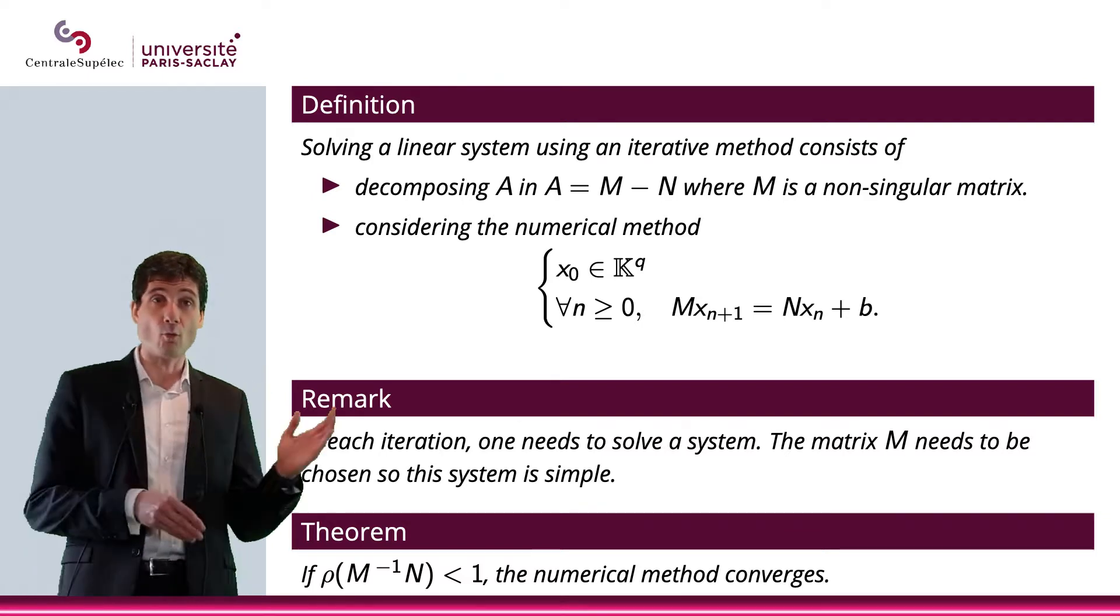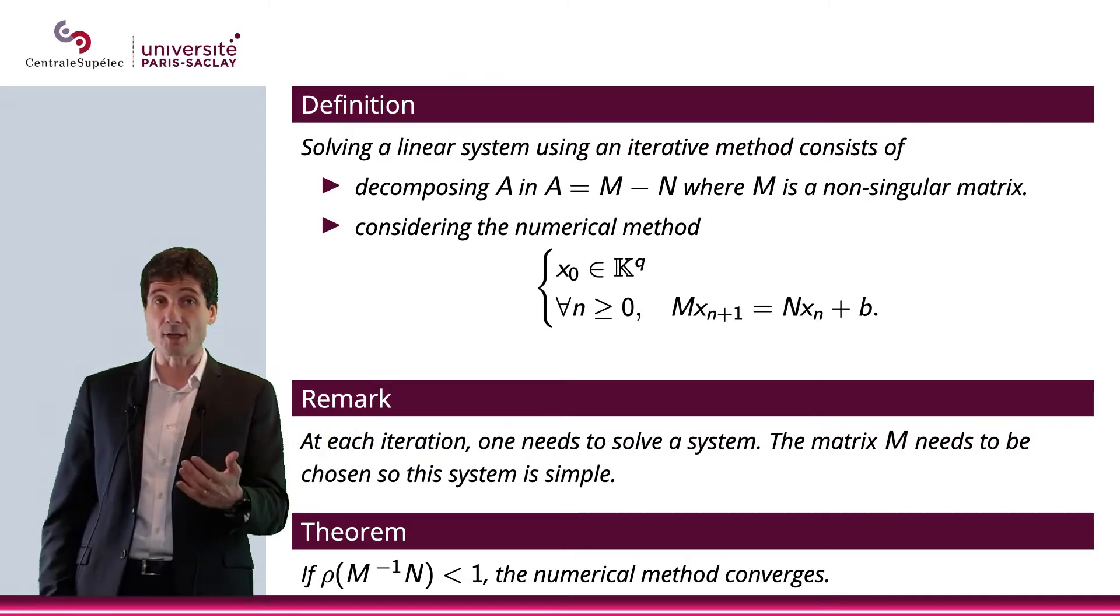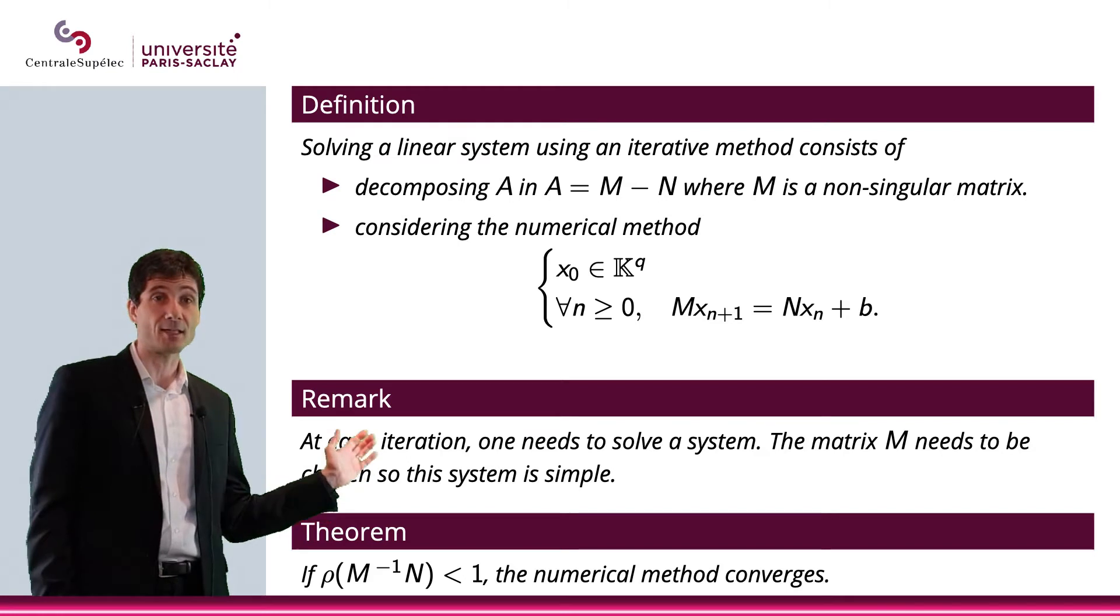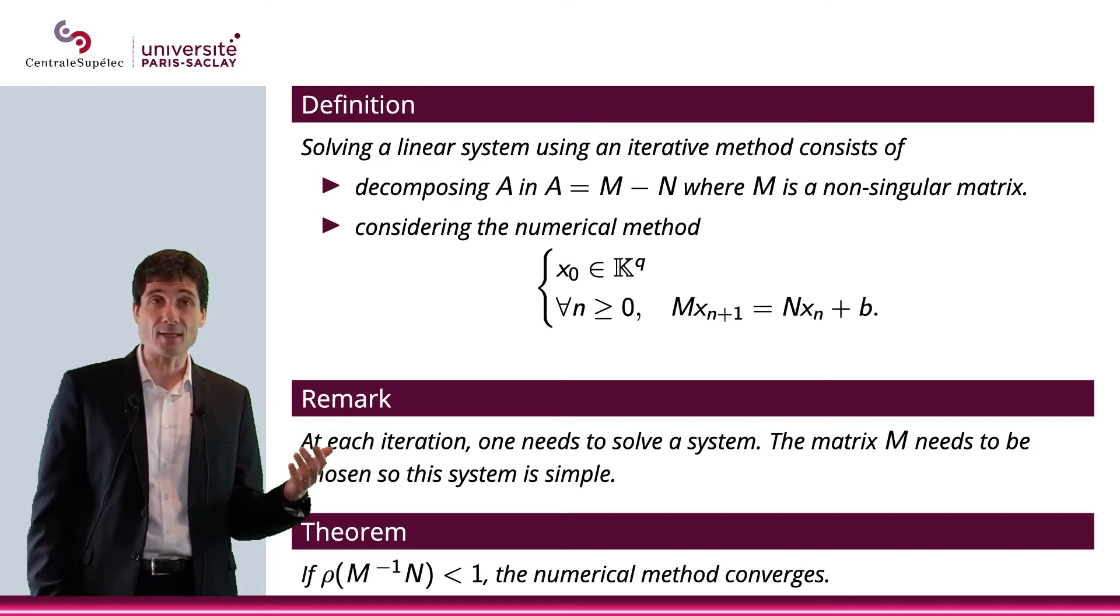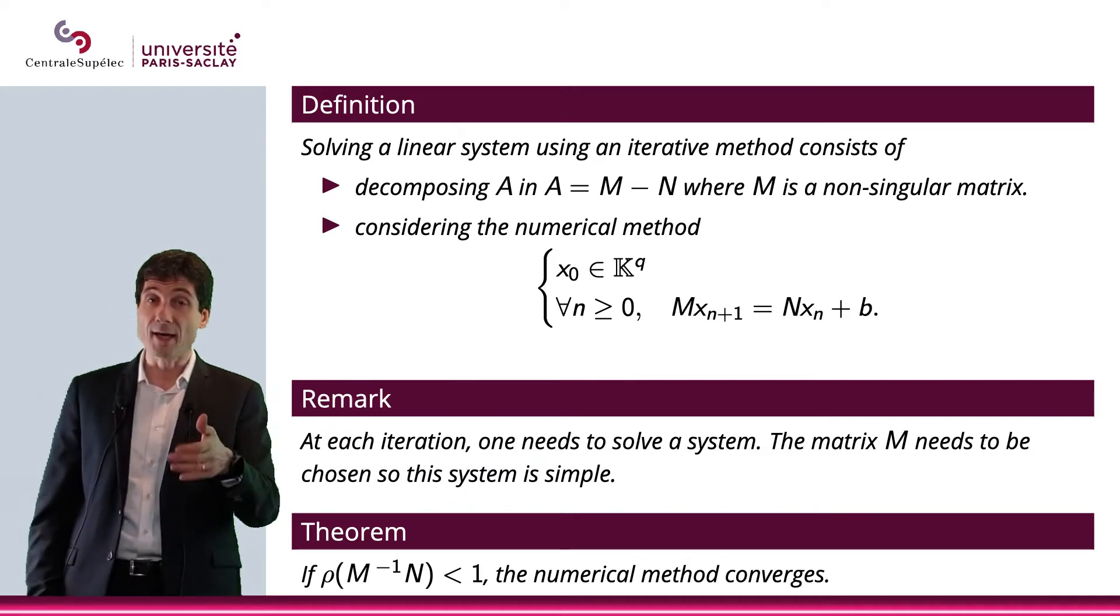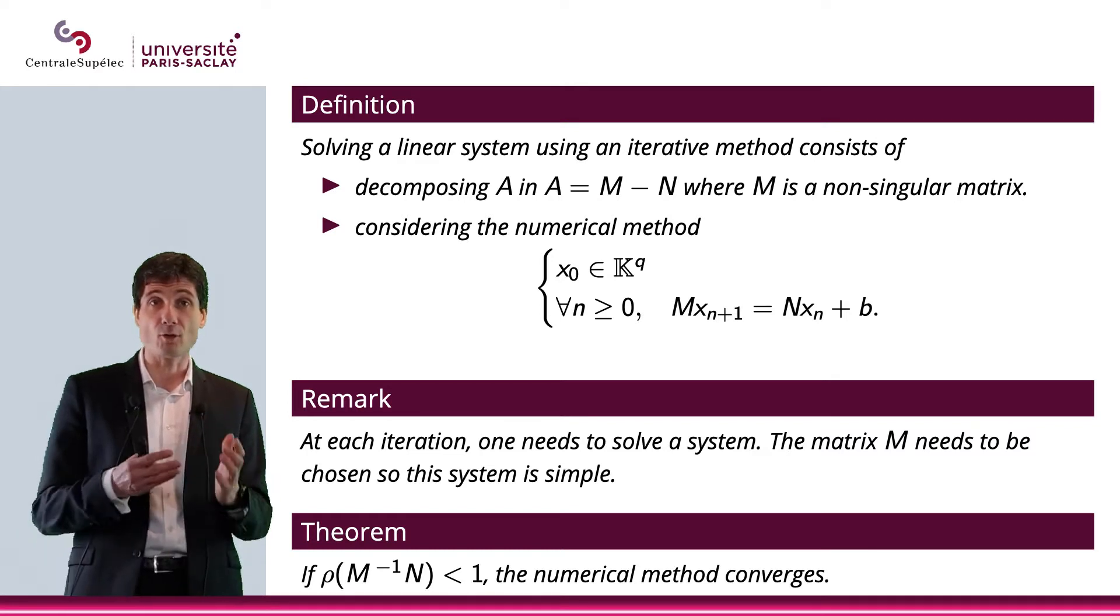Now, what you want to have is the spectral radius of M inverse times N, strictly smaller than 1. And if you have this, then this numerical method will work, and you can go back to the video of section 3 to understand why.